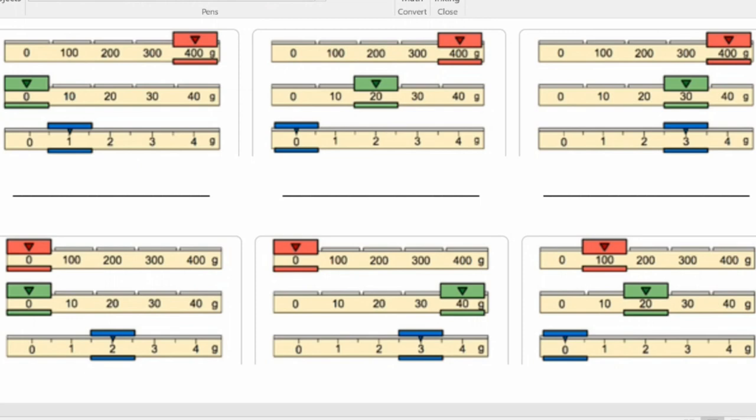In the following pictures, try to find the total mass of each triple beam. The first one is 400 plus 0 plus 1 for our answer of 401 grams.